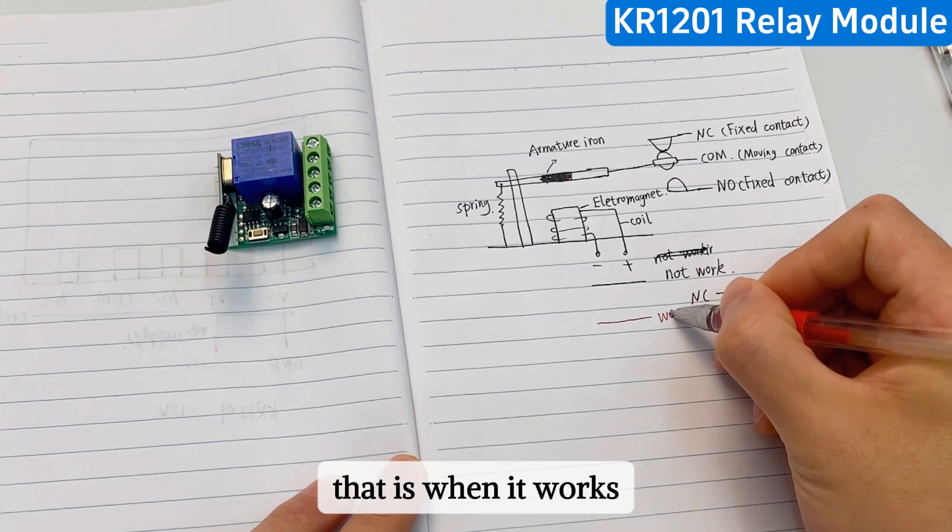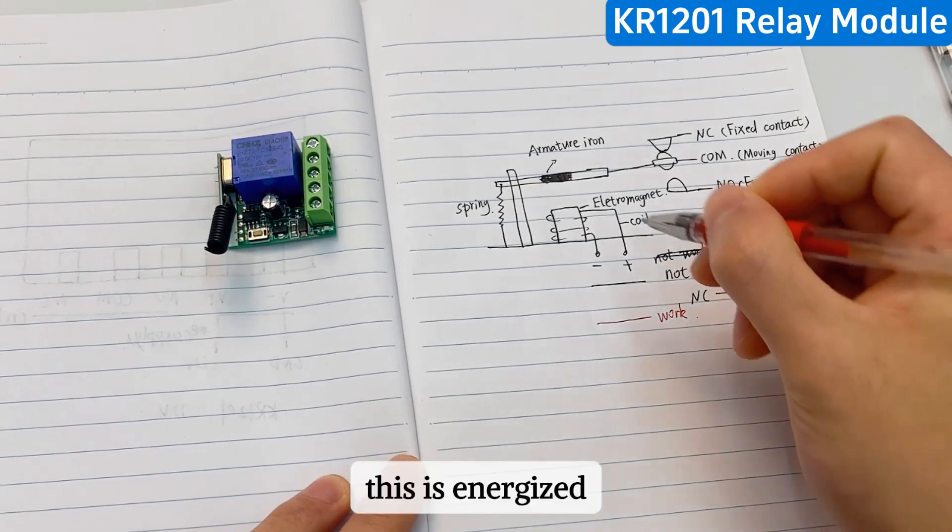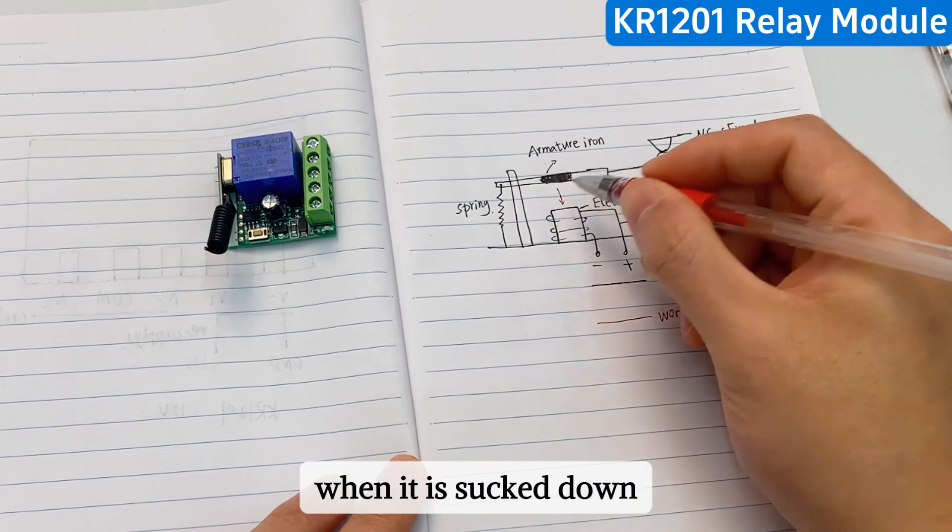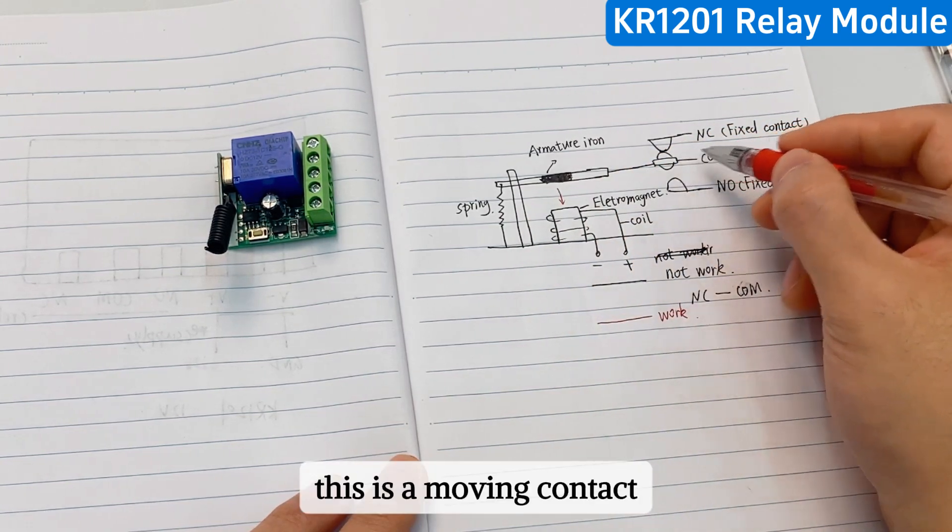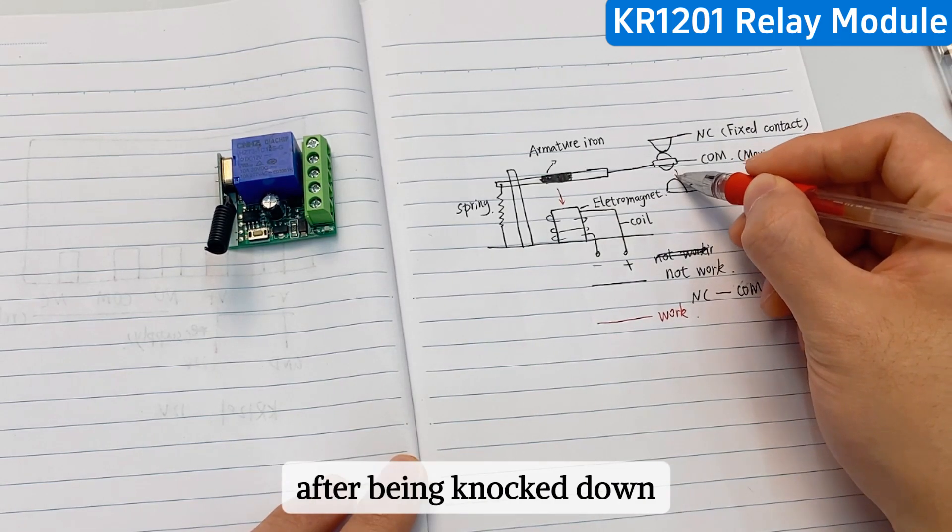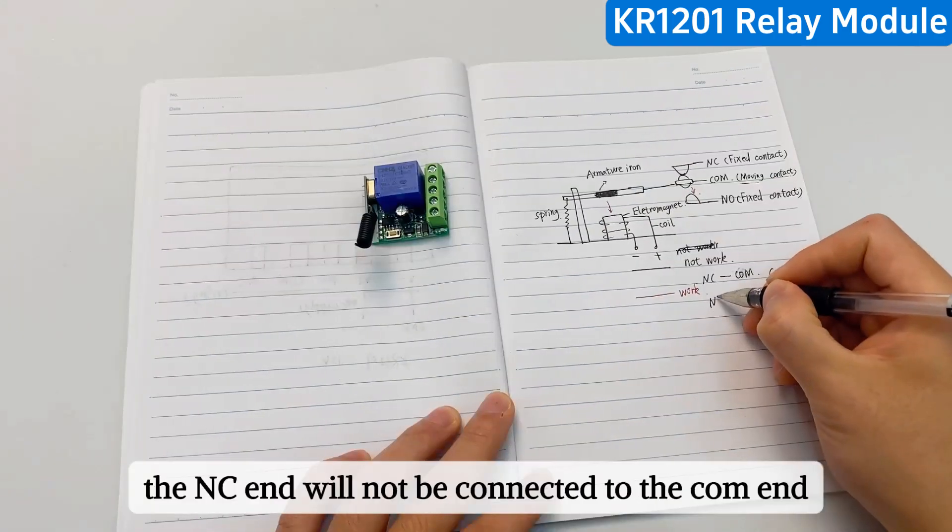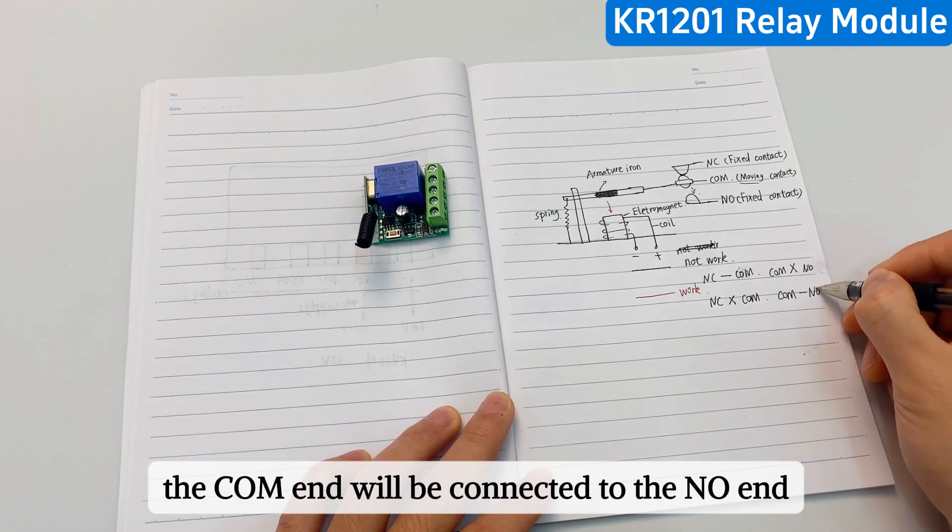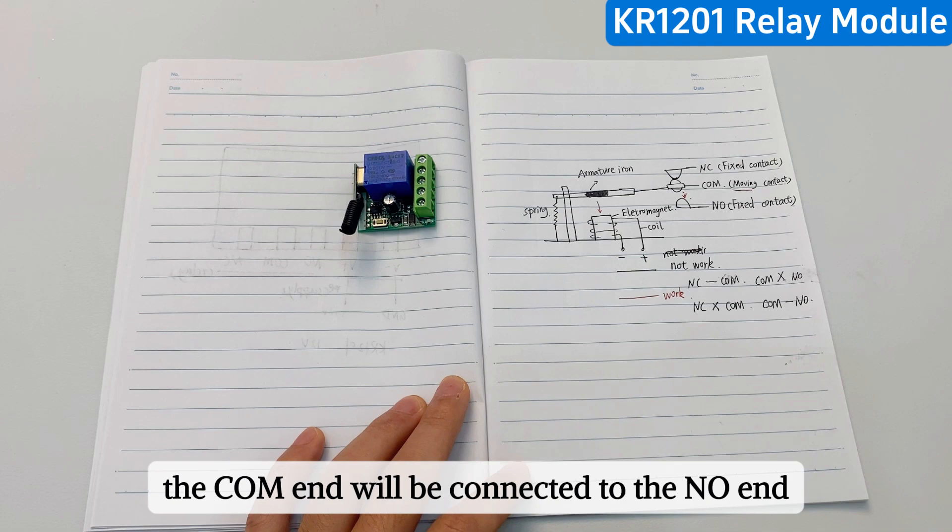This is energized. It will be sucked down. When it is sucked down, this is a moving contact. It will also be knocked down. After being knocked down, the NC end will not be connected to the com end. The com end will be connected to the NO end.